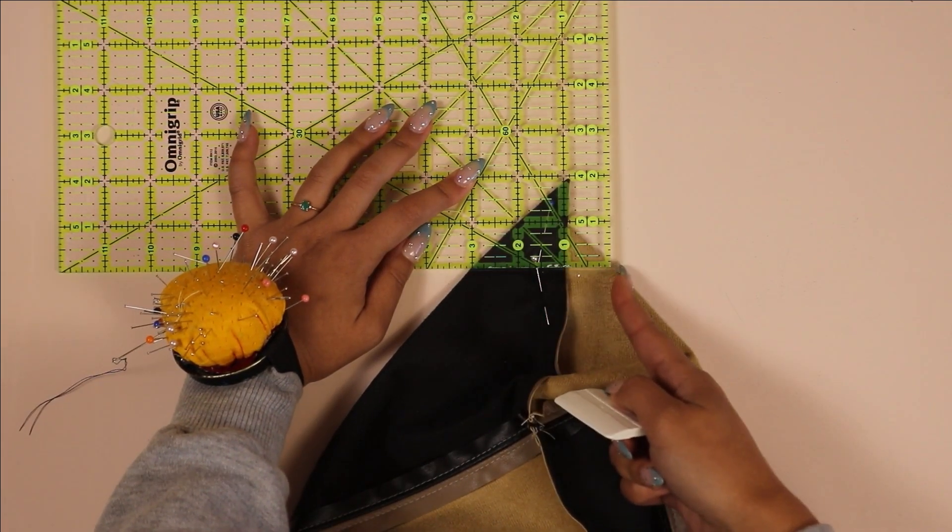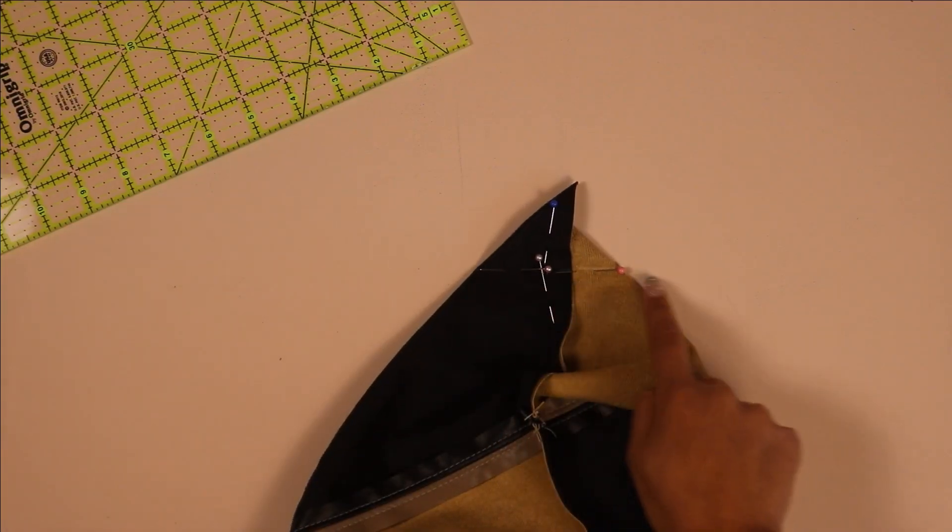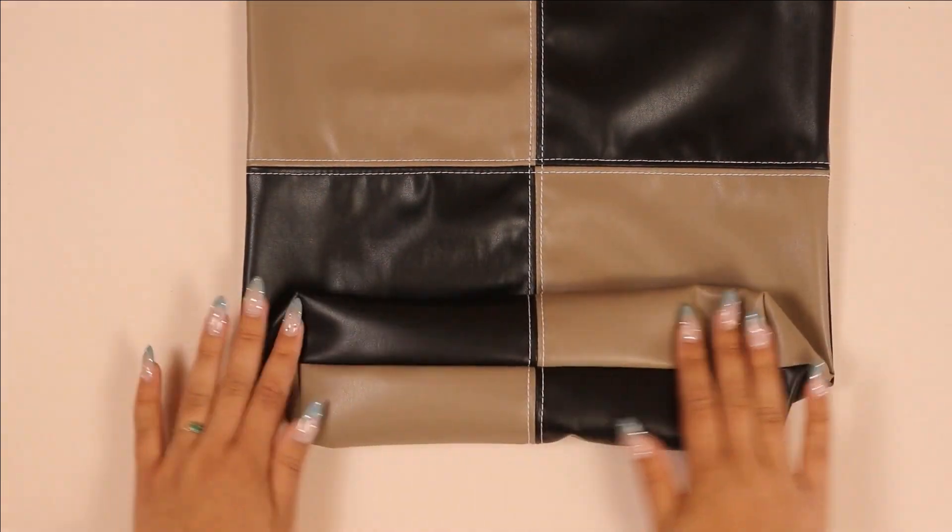Then I'm just going to stitch along that line. Now just flip your bag right side out and you should have this boxed corner on the bottom.